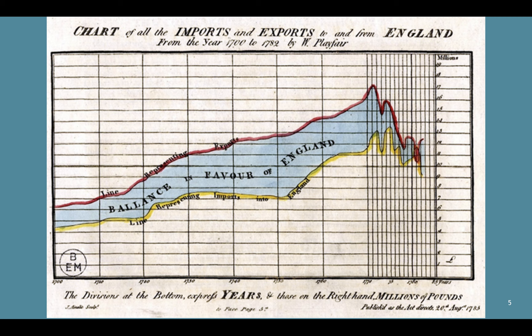Here's another example dealing with a similar economic phenomenon. This is the chart of all imports and exports to and from England from the year 1700 to 1782 — about 80 years. The line in red represents exports, and below it is the line representing imports. As you can see, the exports are higher than imports for this entire period of time.